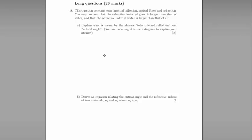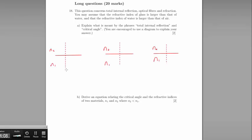Part A: explain what is meant by the phrases 'total internal reflection' and 'critical angle'. We are encouraged to use a diagram to explain the answer. Here we have three ray diagrams. When light strikes the boundary between two mediums, where N2 has a lower refractive index than N1 — for example, glass and air — the light will bend away from the normal.